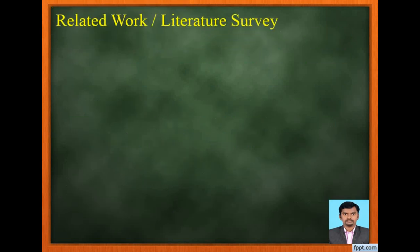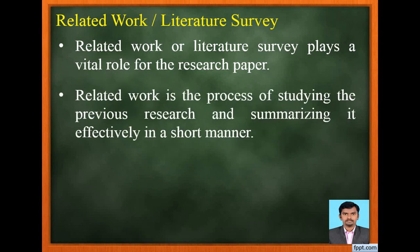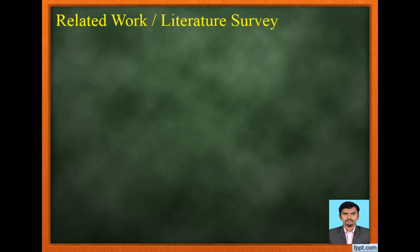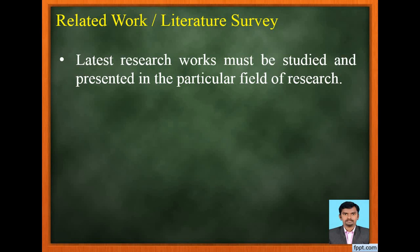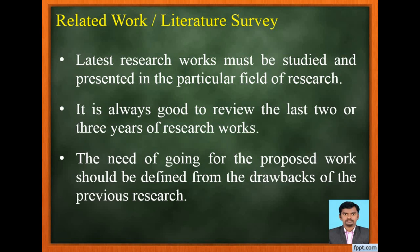Now let us see related work or literature survey. Related work plays a vital role in every research paper. It is the process of studying previous research and summarizing it effectively in a short manner. The drawbacks of the previous research should be presented in the related work section. Latest research works must be studied, and it is always good to review the last 2 to 3 years of research works in the particular field. The need for the proposed work should be defined from the drawbacks of the previous research.